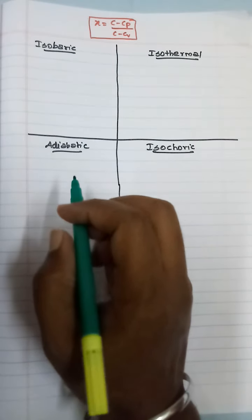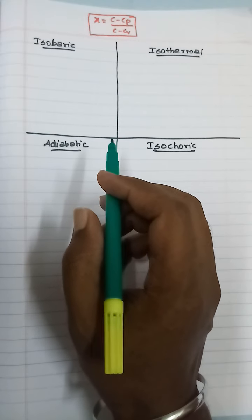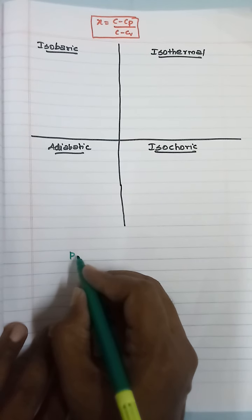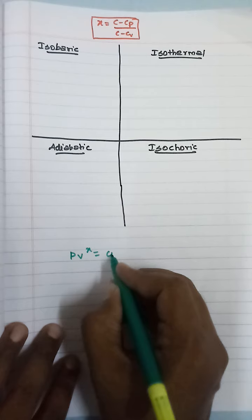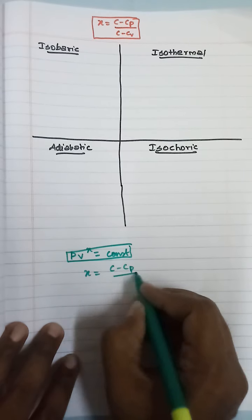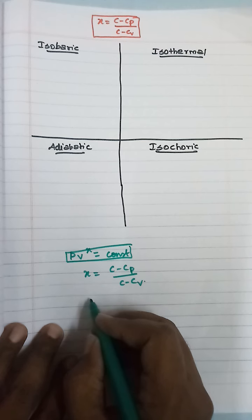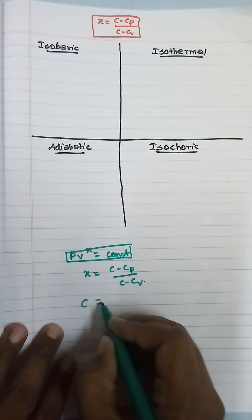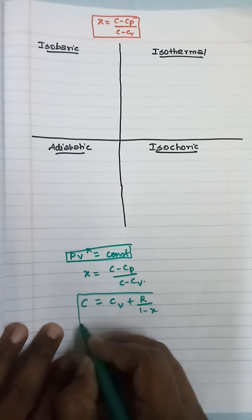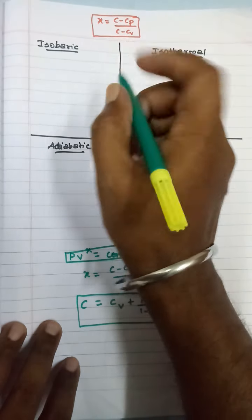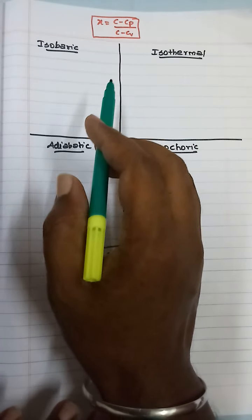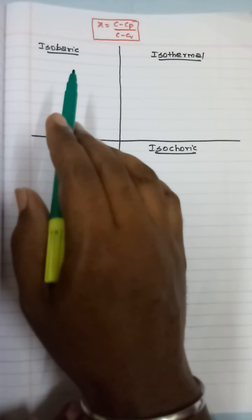Hello everyone. In the previous video we discussed the polytropic process and derived some relations. The general polytropic equation is PV raised to the power X equals constant, where X equals (C minus CP) by (C minus CV), and the derived specific heat capacity C equals CV plus R by (1 minus X). In this session, using this polytropic constant X, we are going to find the PV relation for different thermodynamic processes.